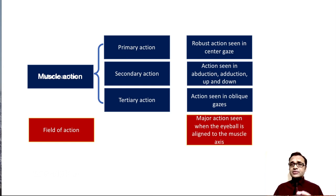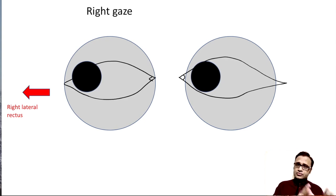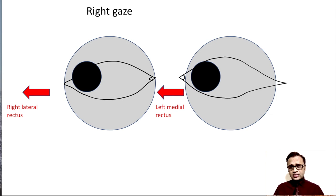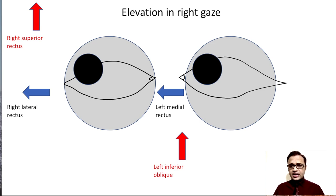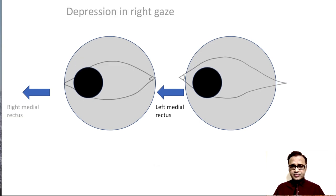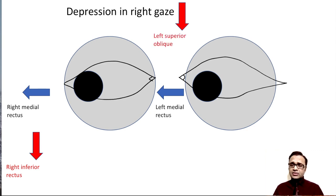The field of action is the major action when the eyeball is aligned to the muscle axis. Suppose this is the right eye and this is the left eye. Right gaze is brought about by the right lateral rectus causing abduction of the right eye, and adduction of the left eye is done by the left medial rectus. If a patient elevates in the right gaze, the right superior rectus causes elevation of the abducted eye, and elevation of the adducted eye is brought about by the left inferior oblique. Depression in right gaze: right inferior rectus causes depression in abduction, and left superior oblique causes depression in adduction.